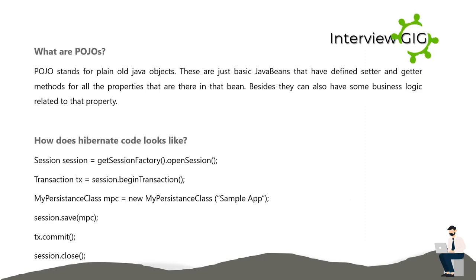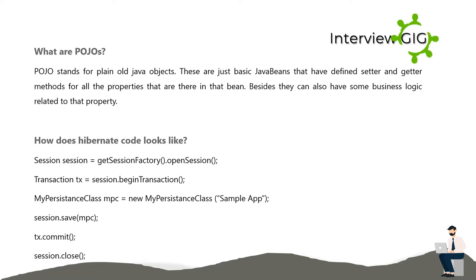What are POJOs? POJO stands for plain old Java objects. These are basic Java beans that have defined setter and getter methods for all the properties in that bean. Besides, they can also have some business logic related to that property.